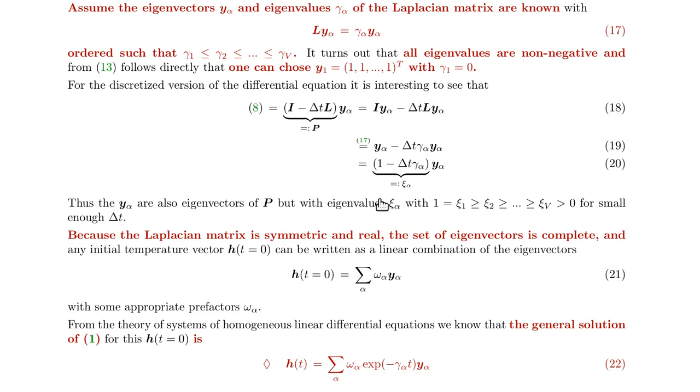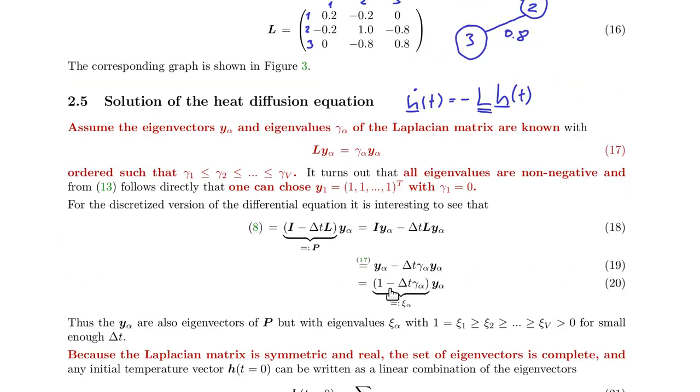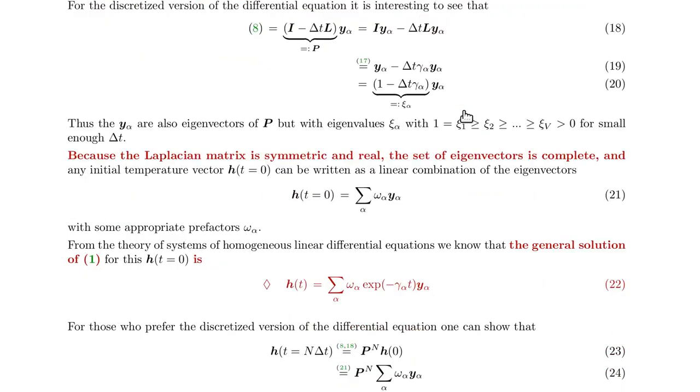So now if we have a set of eigenvectors and eigenvalues, we can write the solution of the differential equation in this way. So we see that h is a superposition of exponentials. So exponential of minus gamma alpha times t times the eigenvector. So normally you would expect to be a plus here if you write this in standard notation. So standard notation would be without this minus. But since we have a minus here, you also need to put a minus down here in the solution.